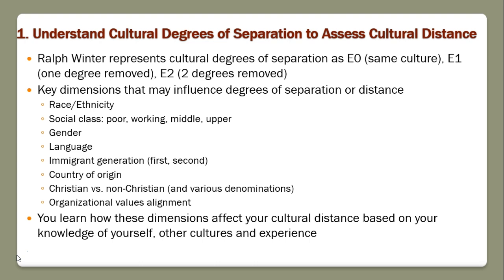There are key dimensions that may influence degrees of separation or distance. Race or ethnicity can create one dimension of separation. Social class — are you poor, working class, middle class, upper class — gender, language, immigrant generation, your country of origin, Christian versus non-Christian, various denominations, and organizational values alignment. As you learn these dimensions, you'll learn how they affect your cultural distance based on your knowledge of yourself and other cultures and experience.